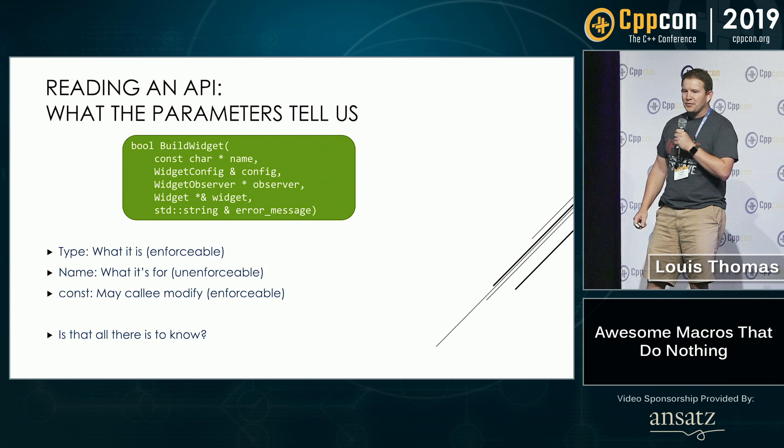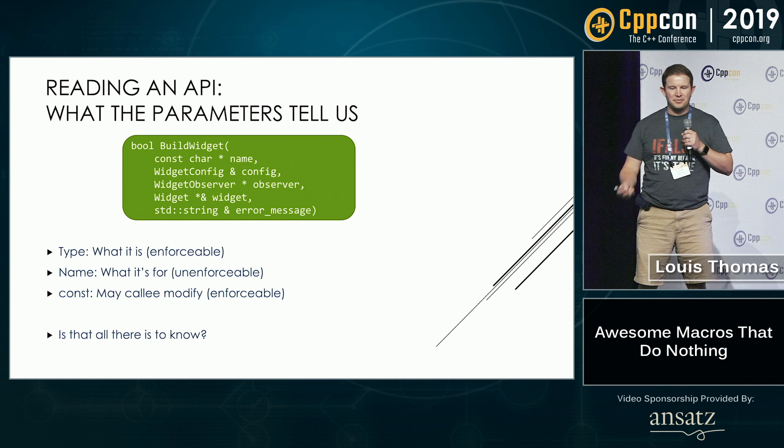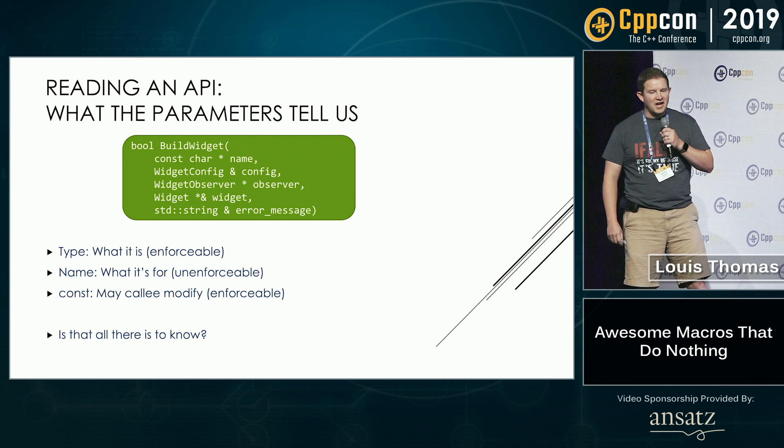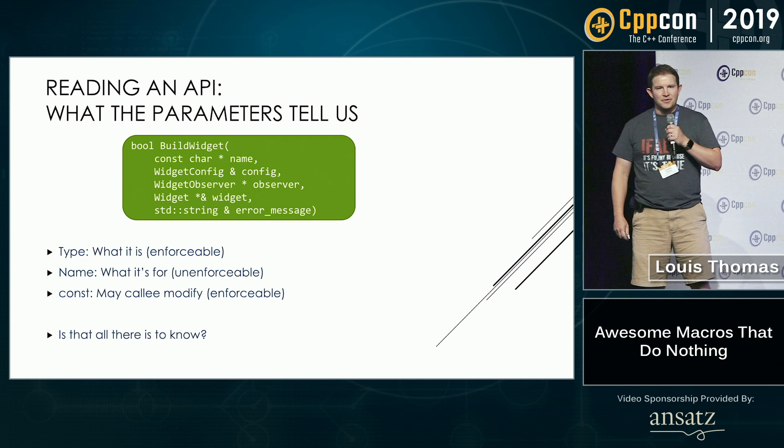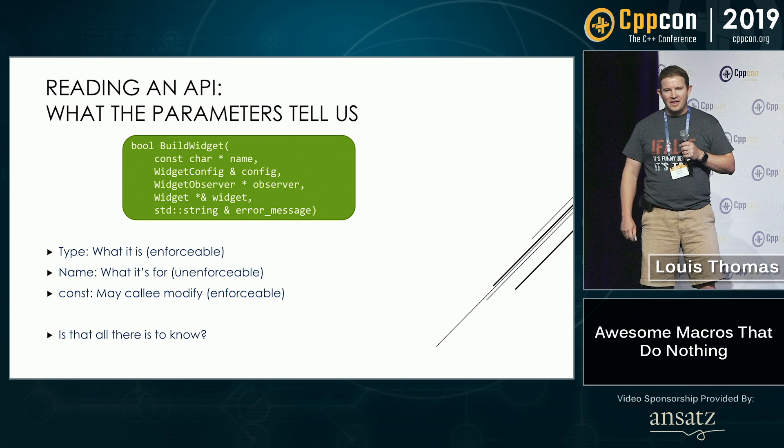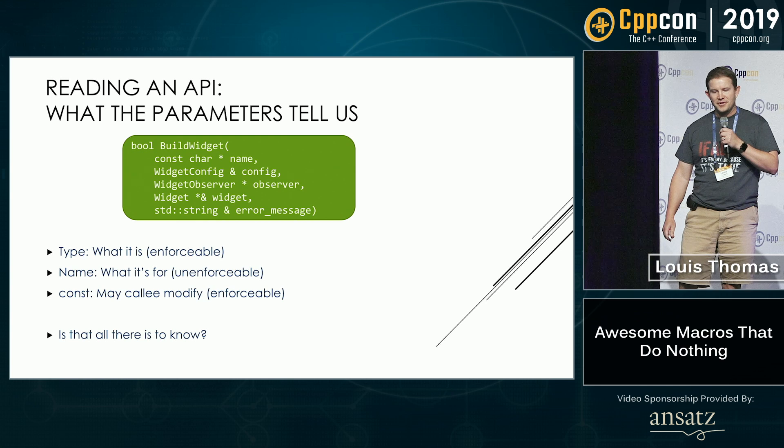So, reading an API — we do this all the time. Here's an example: we've got a function with a bunch of parameters. What can we learn from just looking at this? We see the type of the parameters, which tells us what that parameter is — the compiler will enforce that. We see the name, which tells us what it's for — important, but not enforceable. There's const, which makes sure the callee doesn't modify the parameter, and that is enforceable.